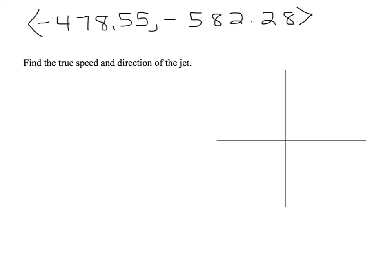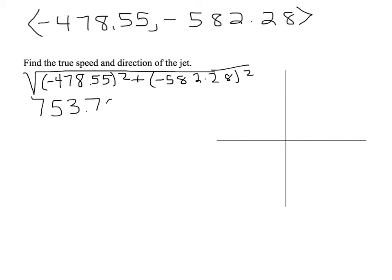Now to find the true speed and direction of the jet. The true speed of the jet is merely the magnitude of the velocity vector that we figured out in the last part. So just the square root of the negative 478.55 squared plus negative 582.28 squared. So the true speed of my jet is about 753.70 miles per hour.